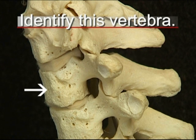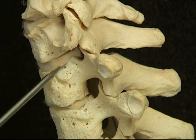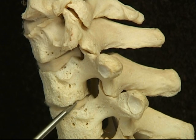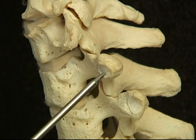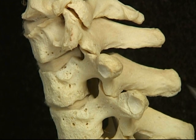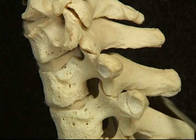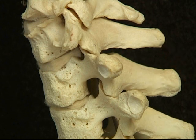This is the first thoracic vertebra because the superior facet for the first rib is a complete circle, with a very small semilunar facet at the lower border and a facet on the transverse process. The spinous process is very long, thick, and horizontal, just like C7.